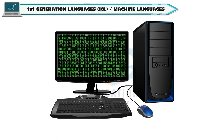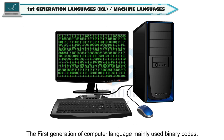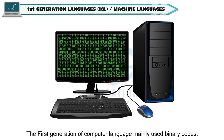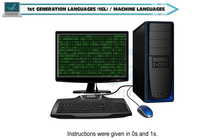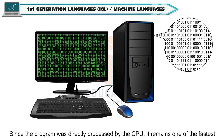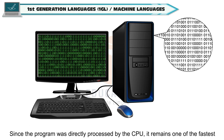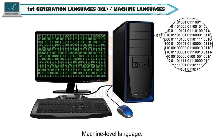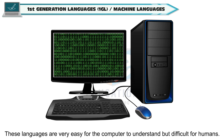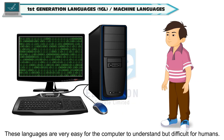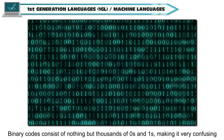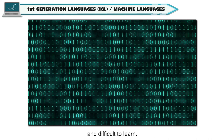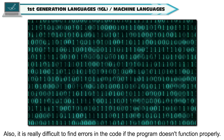The first generation of computer language mainly used binary codes. Instructions were given in 0s and 1s. Since the program was directly processed by the CPU, it remains one of the fastest programming languages. 1st generation language is also known as machine-level language. These languages are very easy for the computer to understand but difficult for humans. Binary codes consist of thousands of 0s and 1s, making it very confusing and difficult to learn. Also, it is really difficult to find errors in the code if the program doesn't function properly.